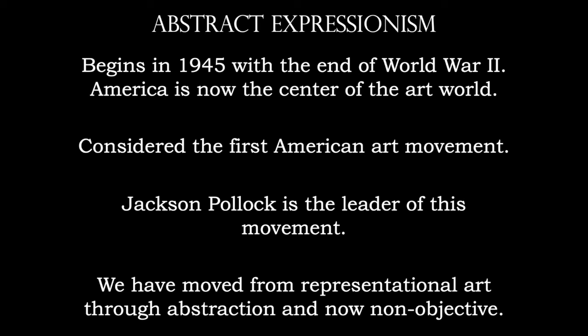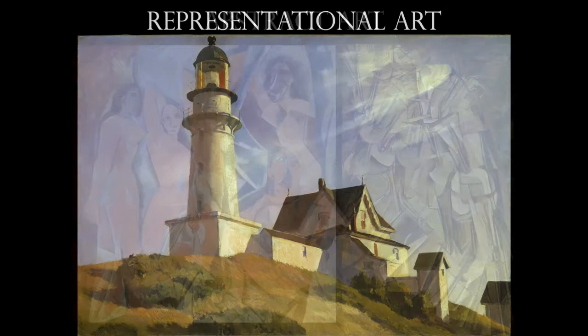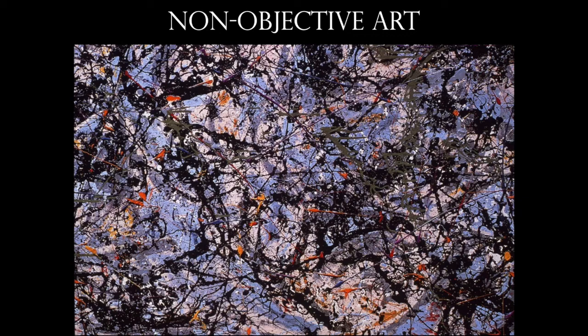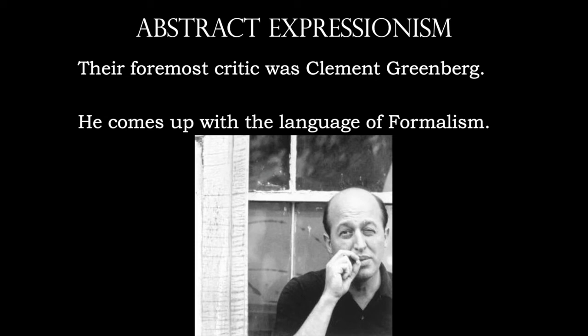Jackson Pollock is the leader of Abstract Expressionism, and this completes our arc. With Impressionism, we started with Representational Art. By the time we got to Cubism, we had Abstraction. And now we have Non-Objective Art — art that does not have a subject matter. The foremost critic of Abstract Expressionism was Clement Greenberg — the guy who put these artists on the map, because when this art first came out, no one understood it. He developed the language of formalism, which is essentially what we've been studying: the formal elements — line, shape, and color.